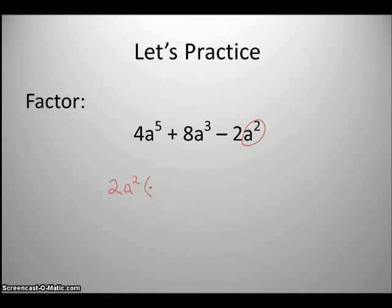So I'm also going to factor out an a squared. Now there's a couple of ways you can look at this. You can say, okay, what's 4 divided by 2? Well, that gives you 2. What's a to the 5th divided by a squared? Well, that's going to give you a to the 3rd. What's 8 divided by 2? 4. Now what's a cubed divided by a squared? It's just going to leave you with an a.